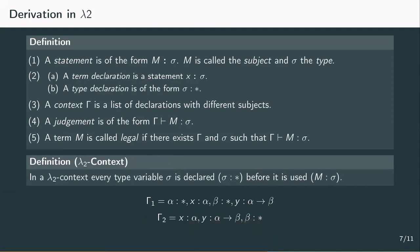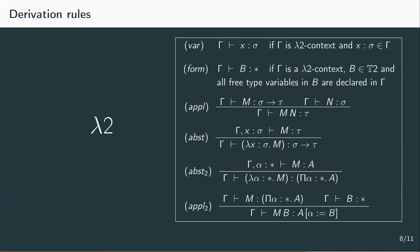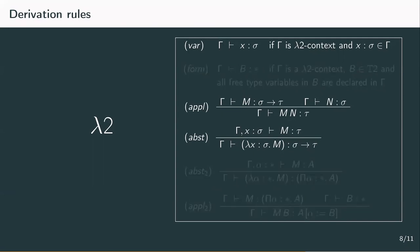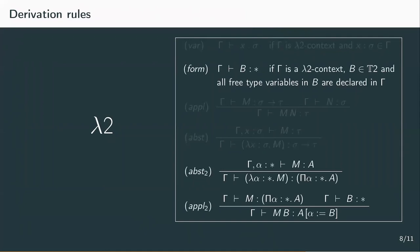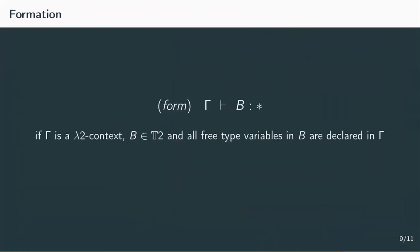Now that we've established all basic definitions, we can come to the most noticeable change: the new and adjusted derivation rules. As you can see, there are more derivation rules compared to the simply typed lambda calculus. Three rules are the ones we already know. The only change is in the variable rule: we now check for a lambda 2 context instead of a lambda context, so we have to be careful that a type variable is introduced before it is used. Since we haven't changed term application and term abstraction, those rules can be taken directly from the simply typed lambda calculus. Three rules, however, are new. The formation rule provides more axioms for a derivation, enabling us to confirm that a certain type is actually a type in this context, and the other two rules are the type pendants to application and abstraction rules for terms.